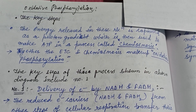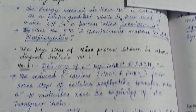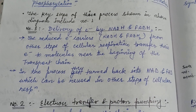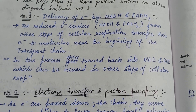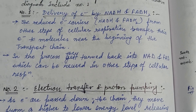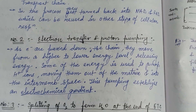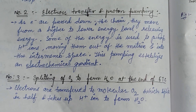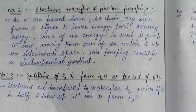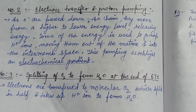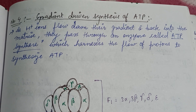This video is about oxidative phosphorylation, which is related to the mitochondrial electron transport chain. There are three steps in which oxidative phosphorylation occurs: delivery of electrons by NADH and FADH2, where electron carriers transfer electrons to other complexes; proton pumping; and splitting of oxygen to form water at the end of the electron transport chain, where complex 4 is required for oxygen splitting to form water.